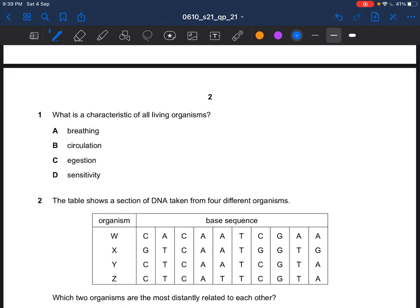Question 1. What is the characteristic of all living organisms? I remember this by using the mnemonic Mrs. NERC. M is for movement, respiration, sensitivity, nutrition, excretion, reproduction, and growth. So the answer is D.